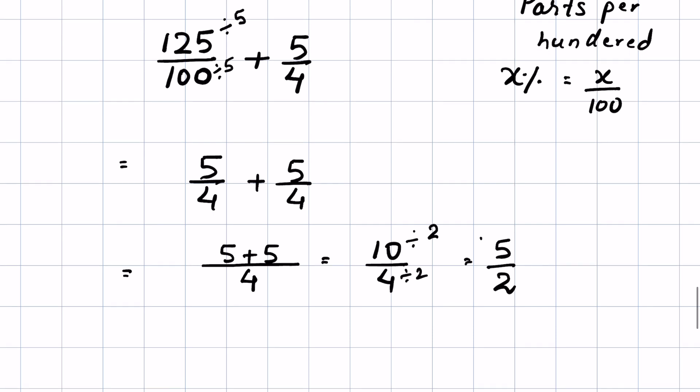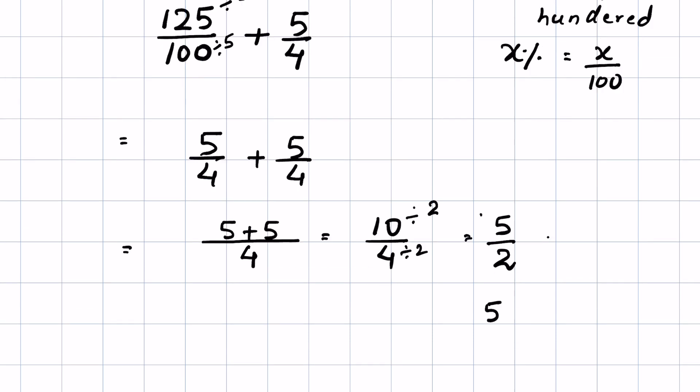You can convert this into mixed fraction. We divide 5 by 2. 2 times 2 is 4. We write the quotient here. This one is remainder. So write the quotient here, remainder here, and the denominator here.